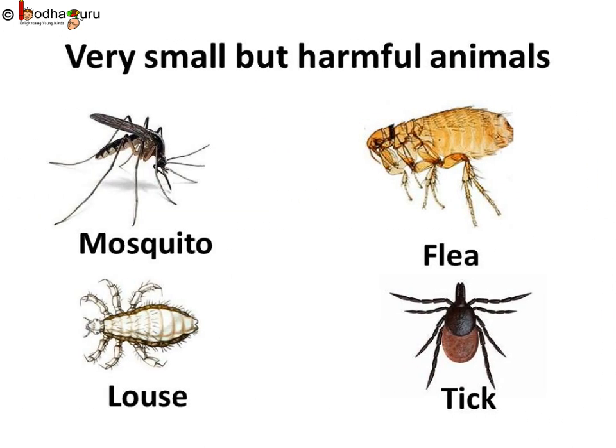Let us now see these small animals or insects. There are some very small but harmful insects. They cause diseases. We all know that the disease malaria is caused by the biting of mosquitoes. They suck our blood. Similarly, flea, louse and tick also suck blood from other animals.